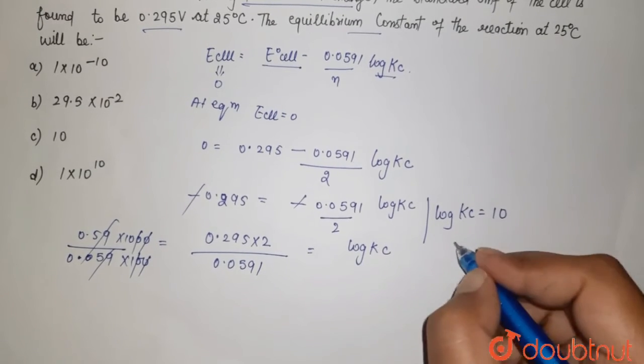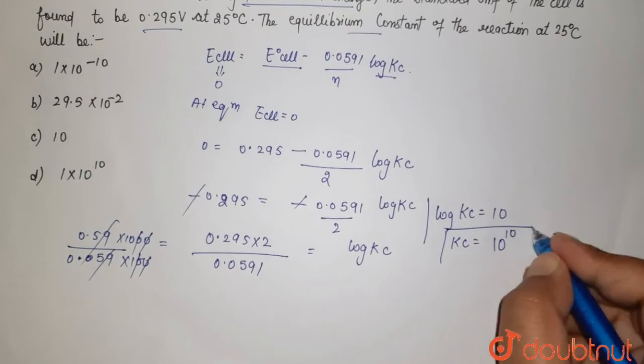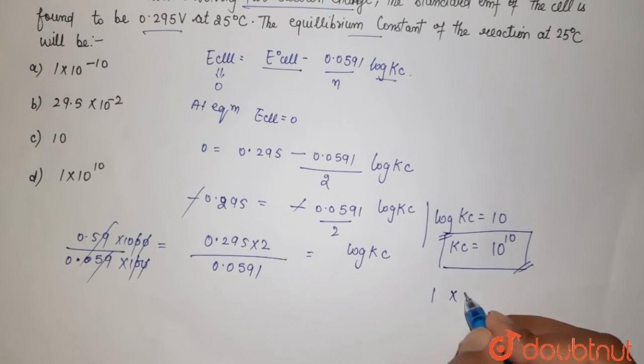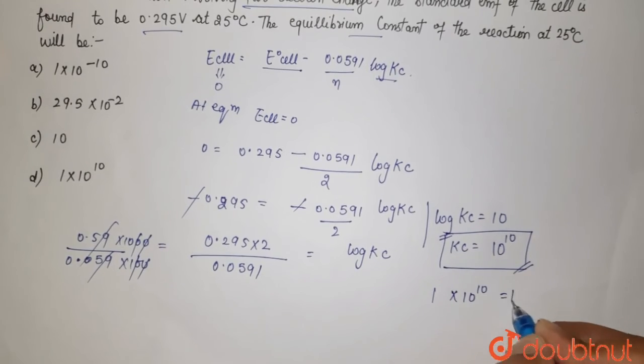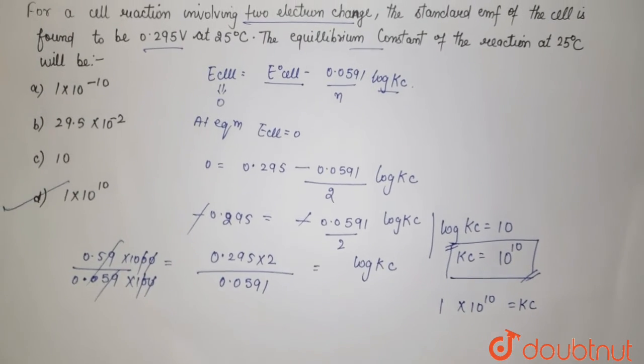So your Kc, when you remove log, it goes to the power like this. So your Kc, that is equilibrium constant, it comes out to be 10 to the power 10. Or you can write it as 1 into 10 to the power 10 which is equal to your Kc. So according to that, your d option will be your right answer.